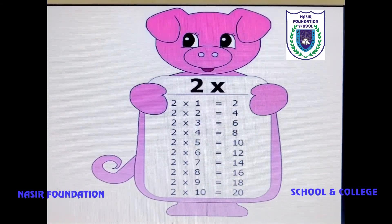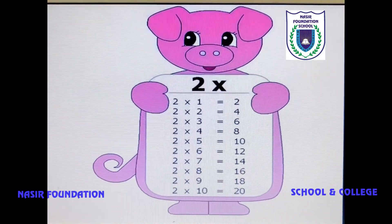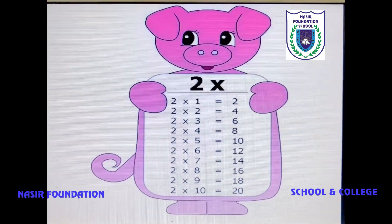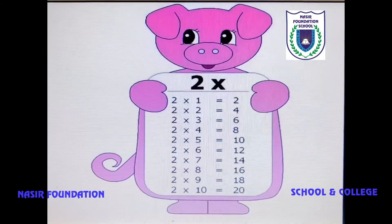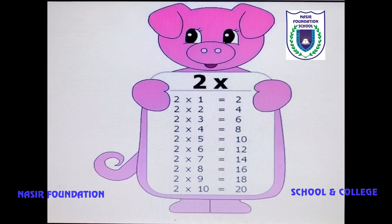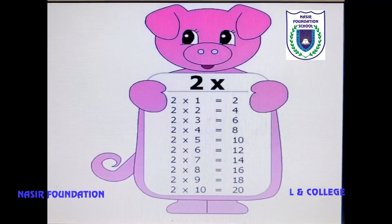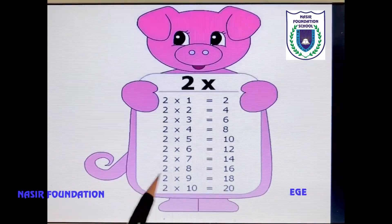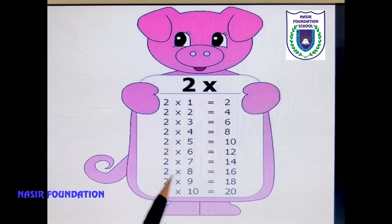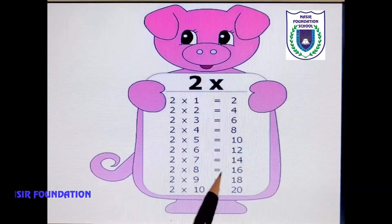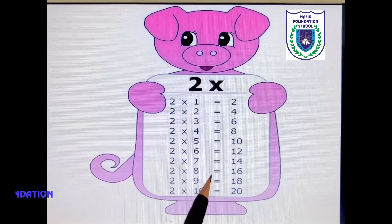The table of 2 is almost ready. Let's try one example. What is 2 into 8? The answer is 16.